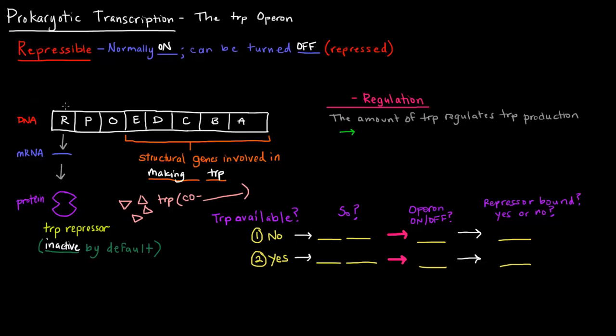So normally this operon just goes ahead and makes tryptophan. Now, once the tryptophan is made, tryptophan can bind the repressor, and then the repressor can bind the operator. So it looks something like this.